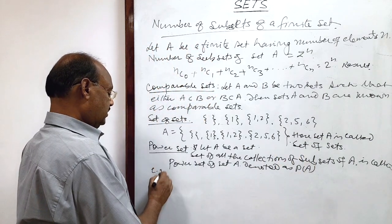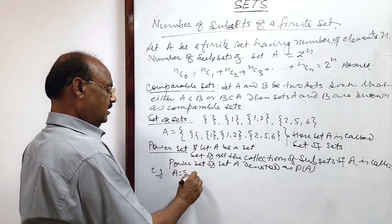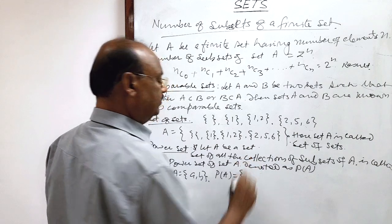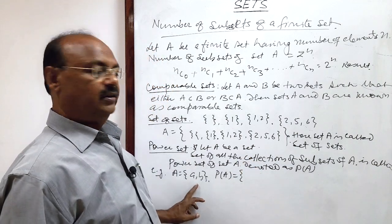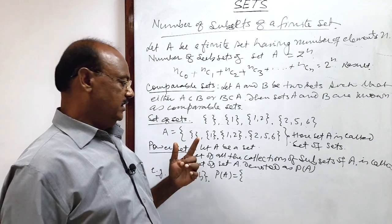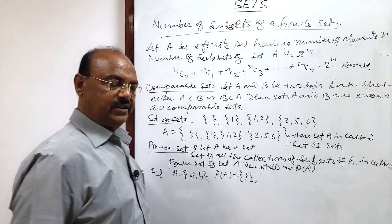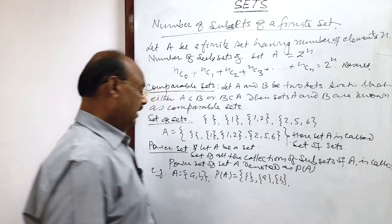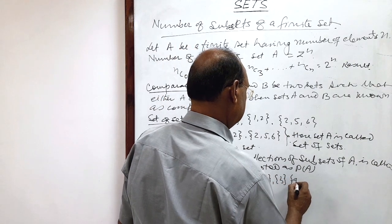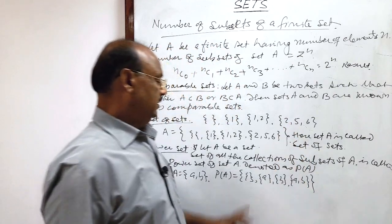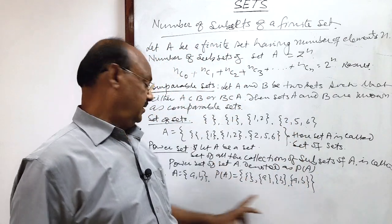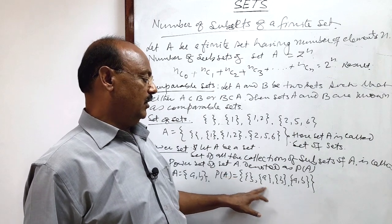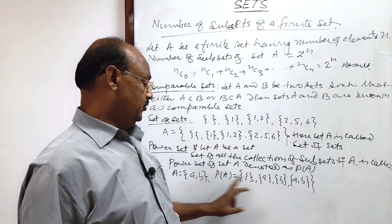For example, suppose set A is having elements a and b. Then, what will be the power set of A? This is the collection of all possible subsets of set A. The subsets are: first, the empty set; next, singleton sets consisting of only one element; and the set A itself. This set of all subsets is the power set of A, denoted as P(A).